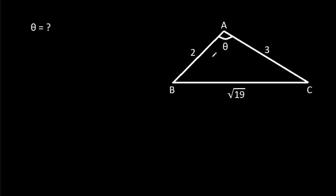In this video, we have been given that AB is 2, AC is 3, BC is root 19, and angle BAC is theta. Then we have to find theta.